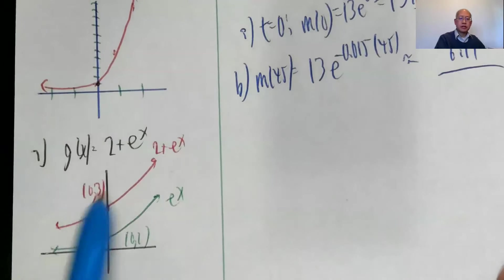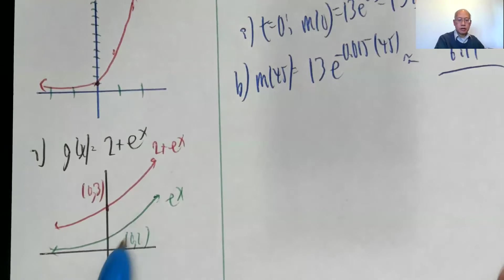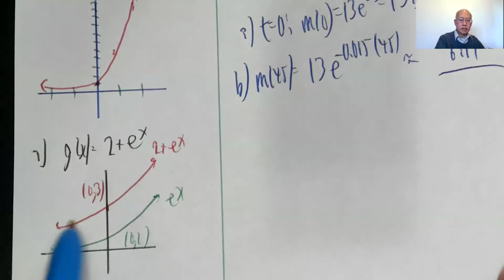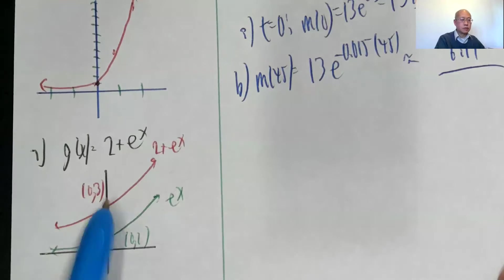Okay, e to the x plus 2, e to the x, 0, 1, just move the whole graph two units up, so passes through 0, 3.